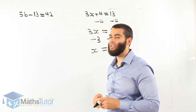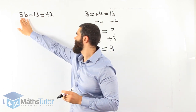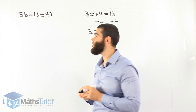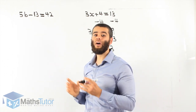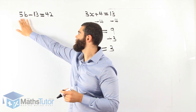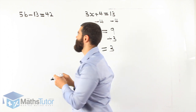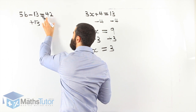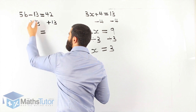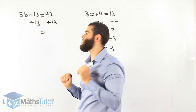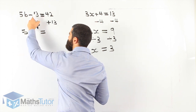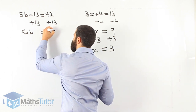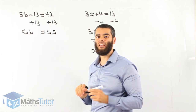5b minus 13 equals 42. Again it's a two-step equation — we have two numerals that we want to get rid of. Which one do we start with first? The 5 or the minus 13? Which one is furthest away from b? The minus 13 is further, so we start with that one first. Minus 13 becomes plus 13. What we do to one side we do to the other — plus 13 on the right side too. Negative becomes positive — we always do the opposite. So 5b: minus 13 plus 13 is gone. 42 plus 13 is 55, so our equation now is 5b equals 55.